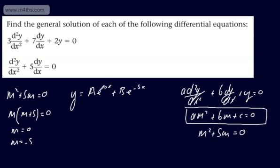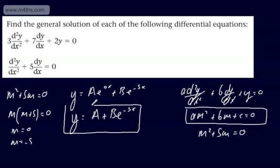We know e to the zero is 1. So the general solution will be A plus Be to the minus 5x where A and B are arbitrary constants. So nice and straightforward, we just have to understand e to the zero is just going to give us 1. So we get A plus Be to the minus 5x.